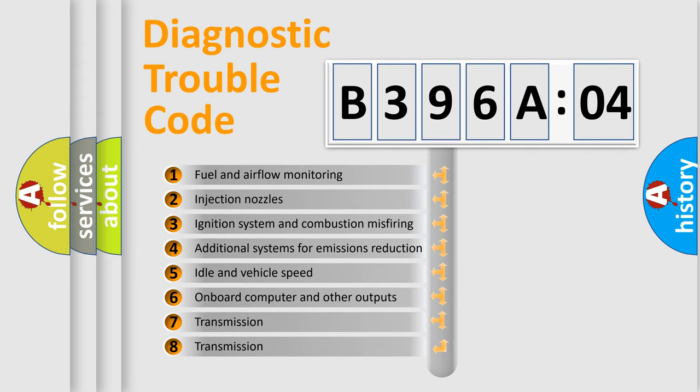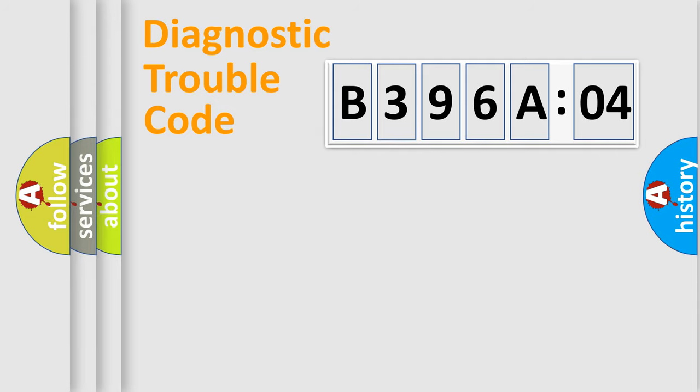The third character specifies a subset of errors. The distribution shown is valid only for the standardized DTC code. Only the last two characters define the specific fault of the group. The add-on to the error code serves to specify the status in more detail.